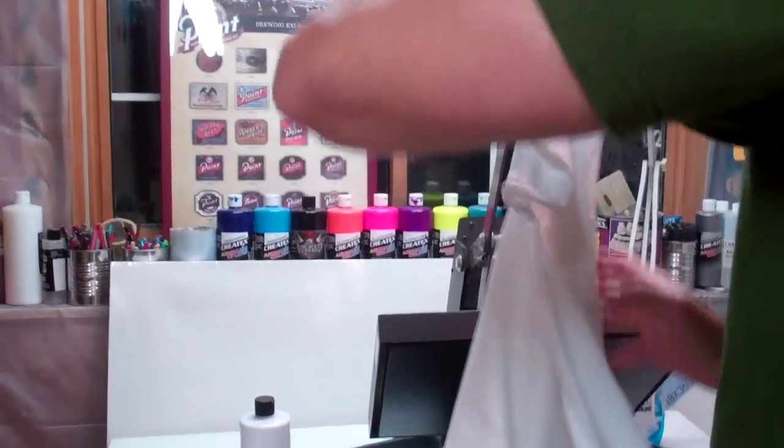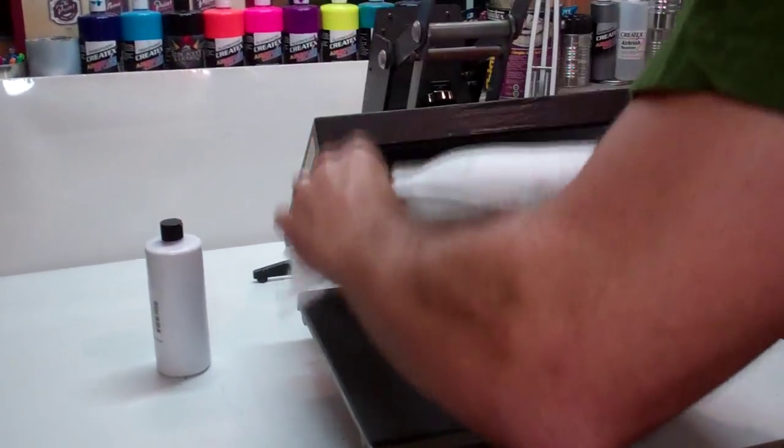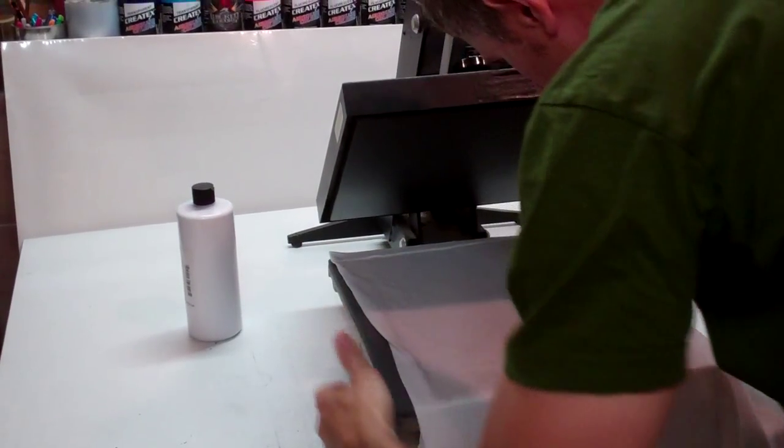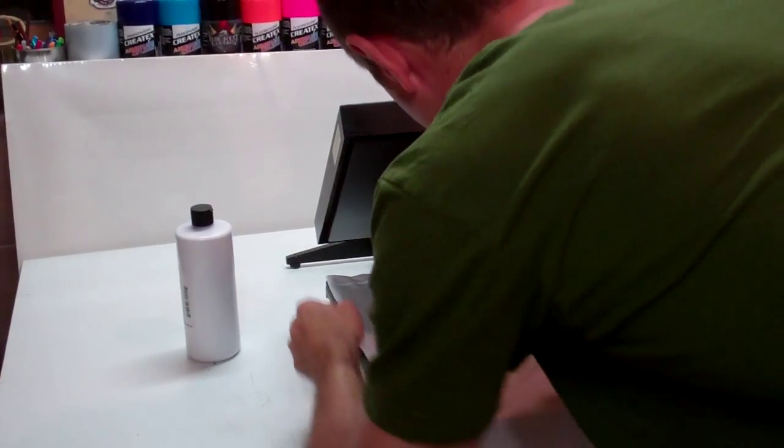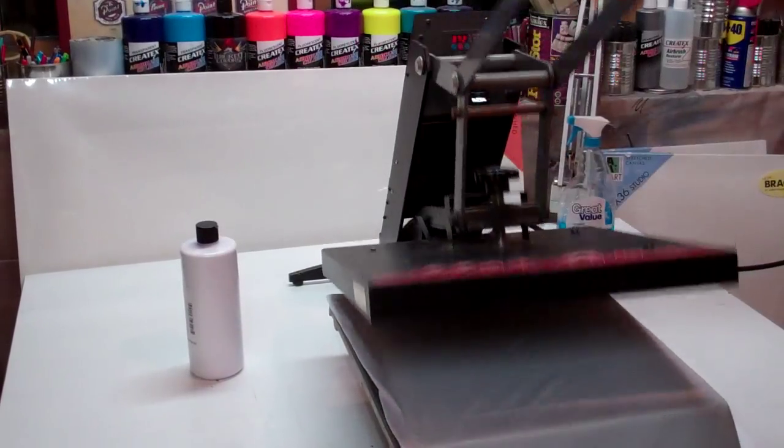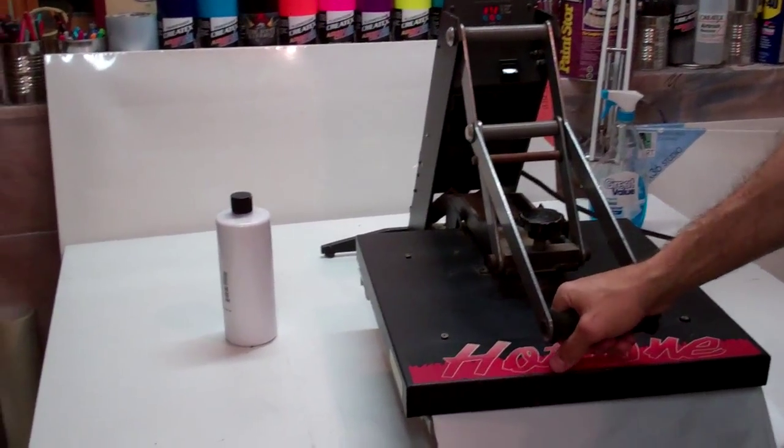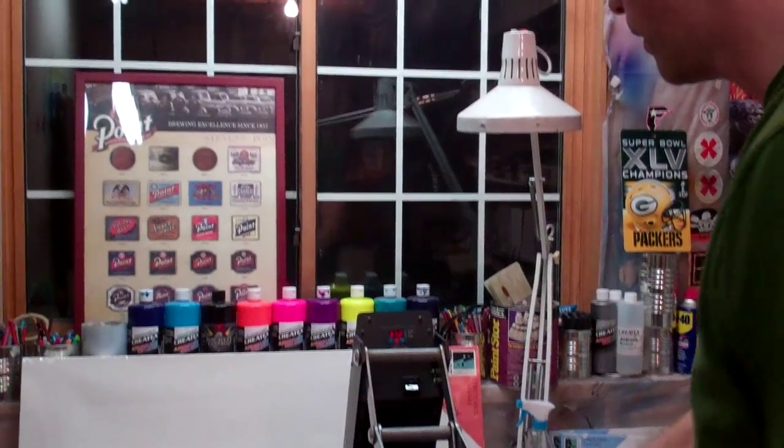Be careful for any type of wrinkles. You don't want to stick it together there. And then what I like to do is turn it around. Instead of trying to pull it all the way through, I'll turn it around so the bottom is towards the back side of the heat press. Again, press down 30 more seconds.